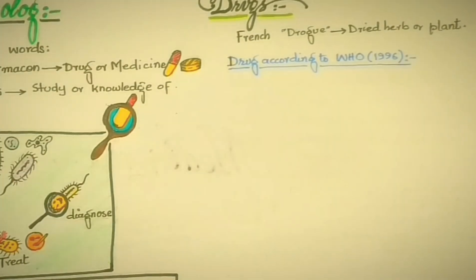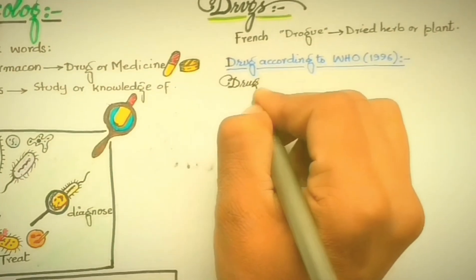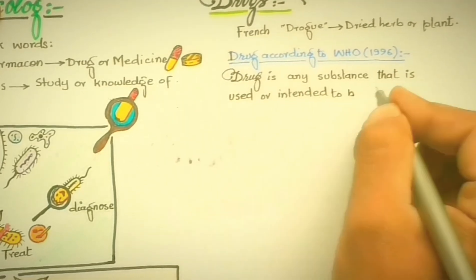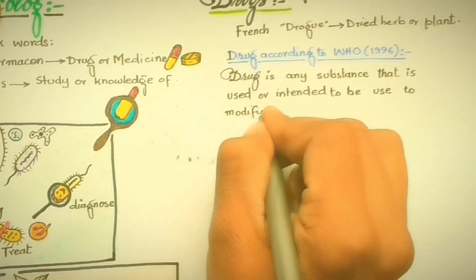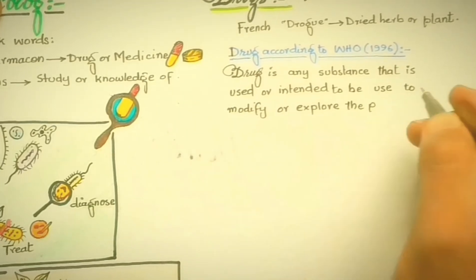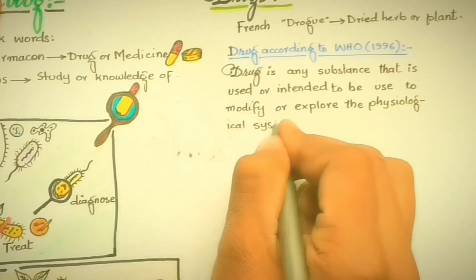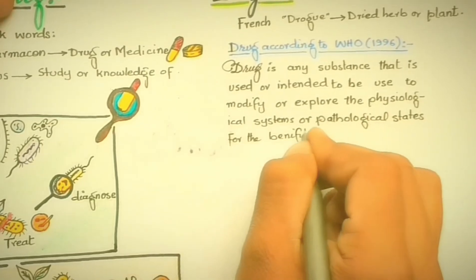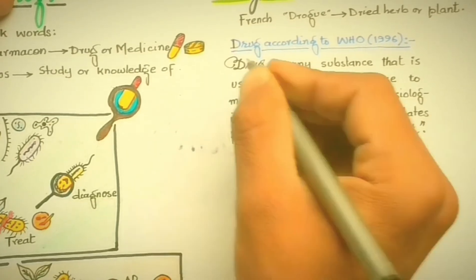According to WHO, a drug is any substance that is used or intended to be used to modify or explore the physiological systems or pathological state for the benefit of the recipient.